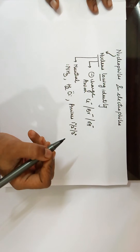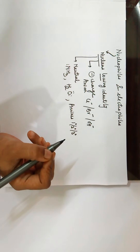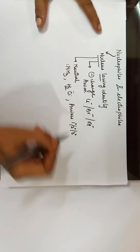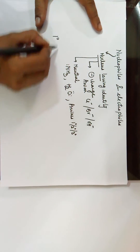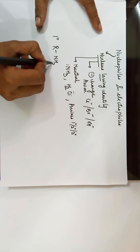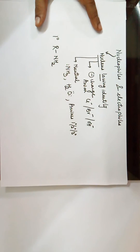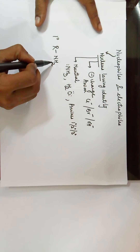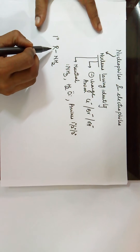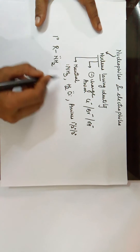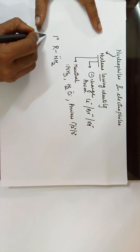In fact, all amines — whether primary, secondary, or tertiary — always act as nucleophiles due to the lone pairs on nitrogen. For example, a primary amine has the structure R–NH₂. Nitrogen has atomic number 7, with five electrons in its outermost shell; two are bonded to hydrogen and one to the alkyl group, leaving behind a lone pair — making it a nucleophile.